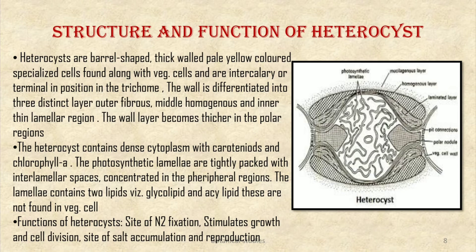Now let us discuss the structure and function of heterocysts. Heterocysts are barrel-shaped, thick-walled, pale yellow colored specialized cells found along with the vegetative cells, and are intercalary or terminal in position in the trichome. The wall is differentiated into three distinct layers: outer fibrous, middle homogeneous, and inner thin laminar region. The wall layer becomes thicker in the polar region.